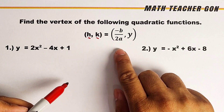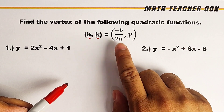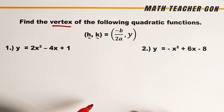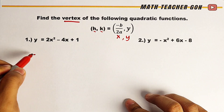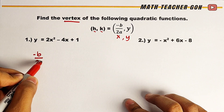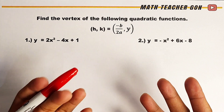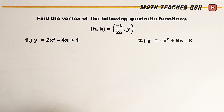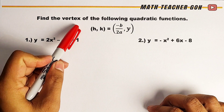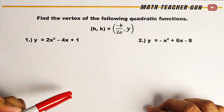We will use the easiest method on how to find the vertex of a quadratic function — negative b over 2a. Hi guys, it's me, teacher Gorn. In today's video, we will try to find the vertex of the following quadratic functions.